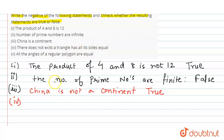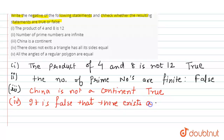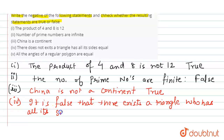The fourth part states: there does not exist a triangle that has all its sides equal. So the negation will be: it is false that there does not exist a triangle with all its sides equal, meaning there exists a triangle with all its sides equal. As we know, an equilateral triangle exists with equal sides, so the original statement is false and the negation is true.